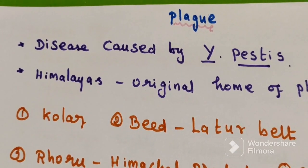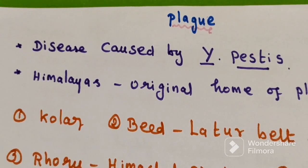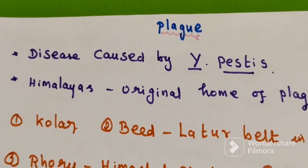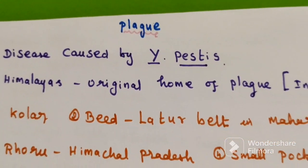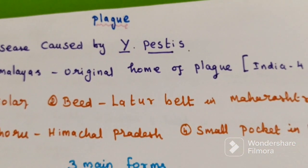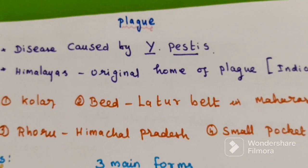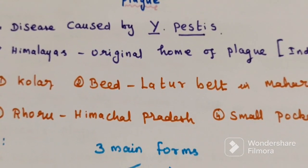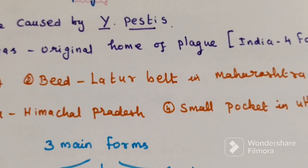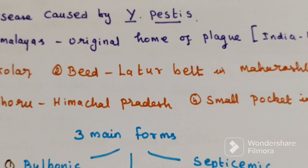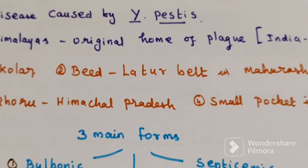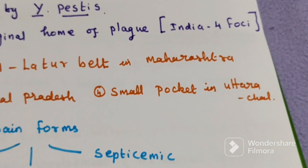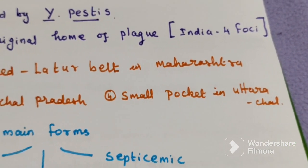Plague is a disease caused by Yersinia pestis. The Himalayas are the original home of plague. In India, there are four foci of plague: first is Kolar; second is Bidar-Latur belt in Maharashtra; third is Rohtru in Himachal Pradesh; and a small pocket in Uttaranchal.